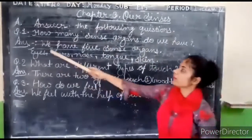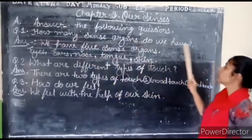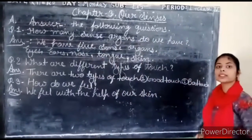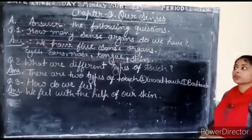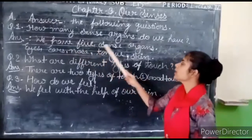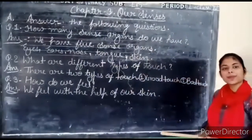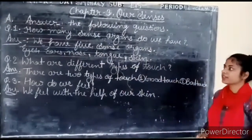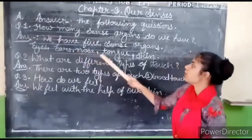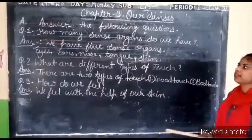Question number 1: How many sense organs do we have? We have 5 sense organs: eyes, ear, nose, tongue, and skin.